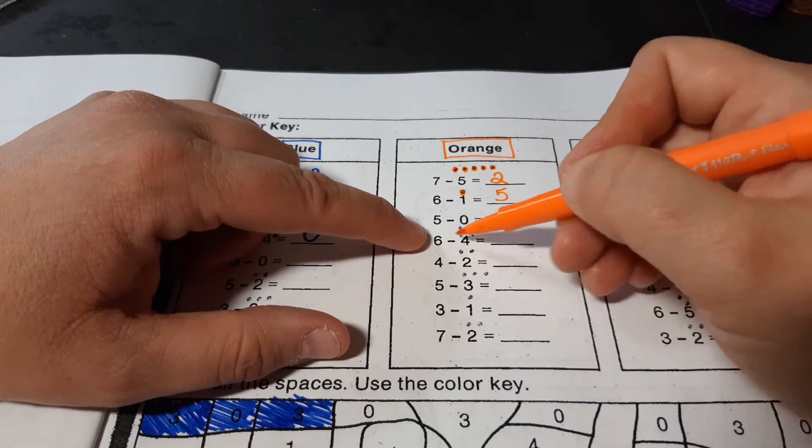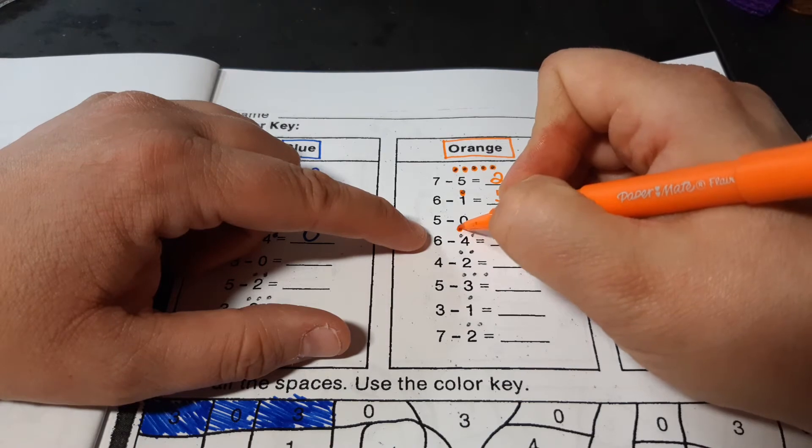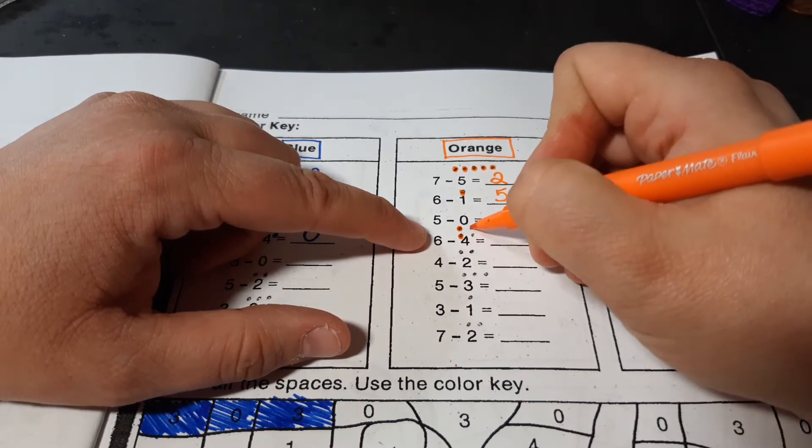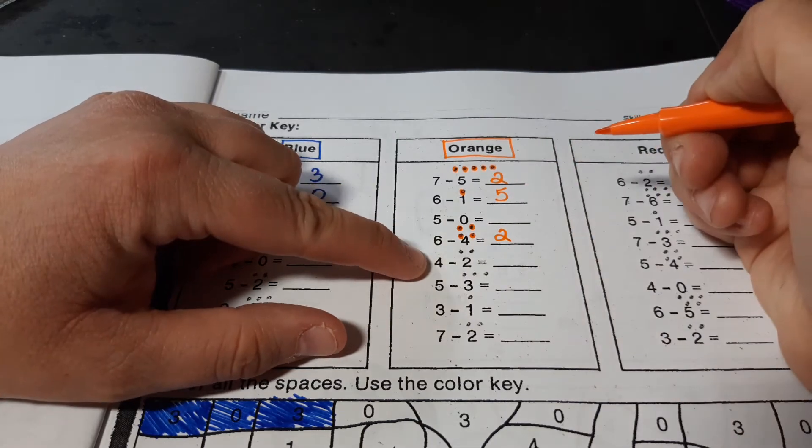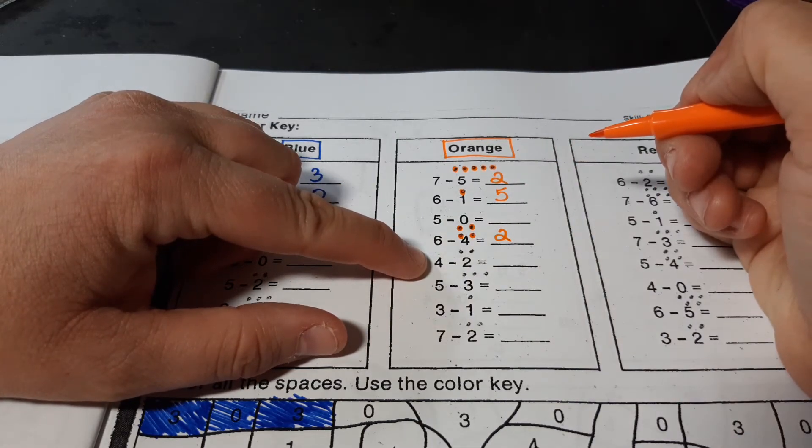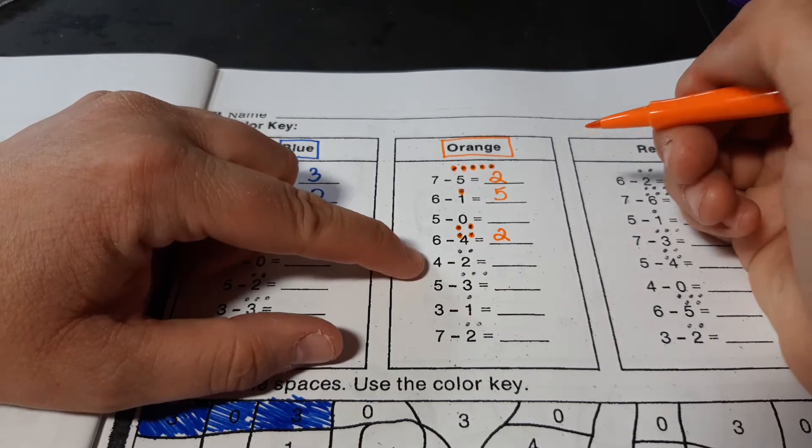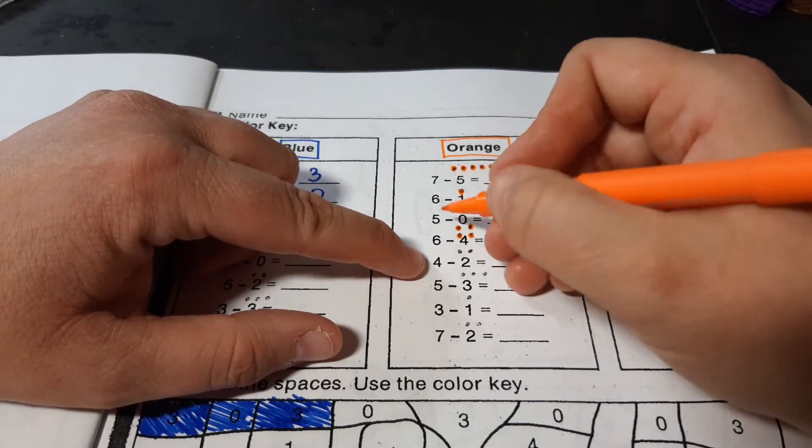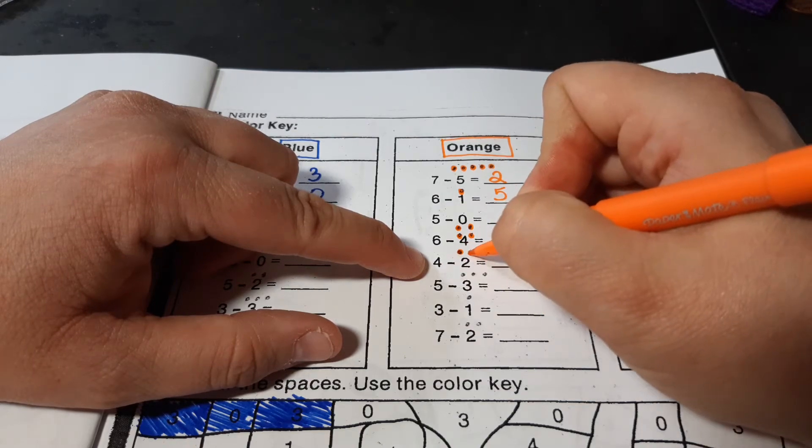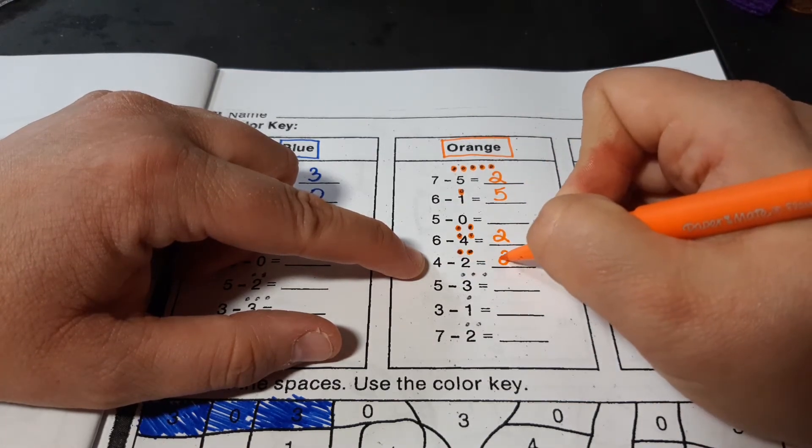6 minus 4. 6, 5, 4, 3, 2. Okay. One more for the orange column. 4 minus 2. 4, 3, 2. Okay.